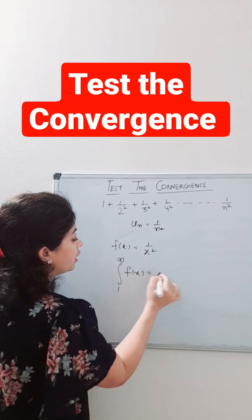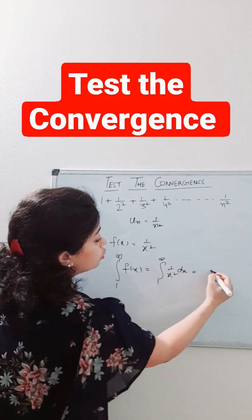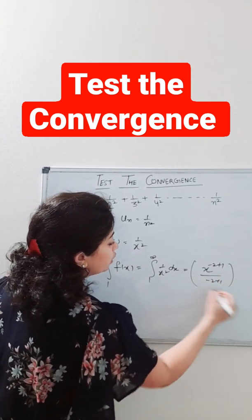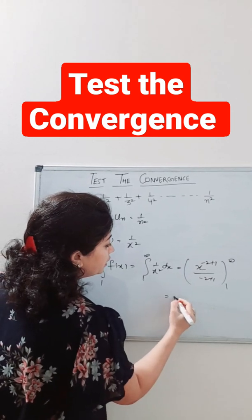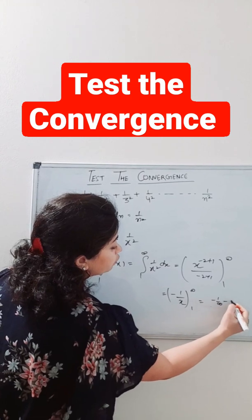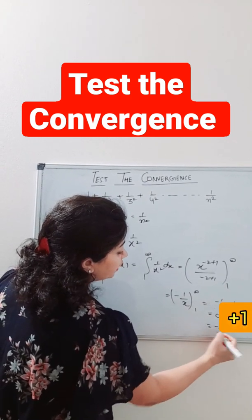We will integrate f(x), and this will be the integral from 1 to infinity of 1/x² dx, which will be equal to x^(-2+1)/(-2+1) from 1 to infinity, that is -1/x from 1 to infinity. And this will be 0 minus (-1), which equals 1. Hence, the series is convergent.